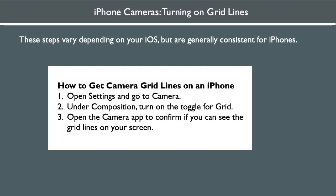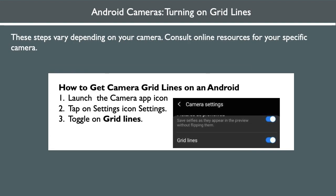The steps for turning on grid lines on an iPhone are shown on screen. The steps for turning on grid lines on Android phones vary depending on your camera; simple steps are shown on screen. However, consult online resources for your specific camera.